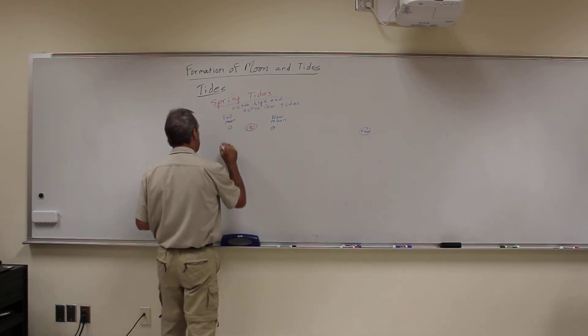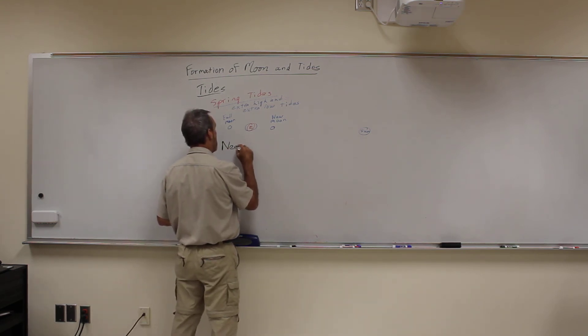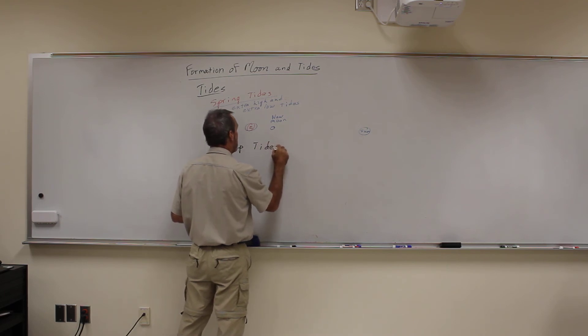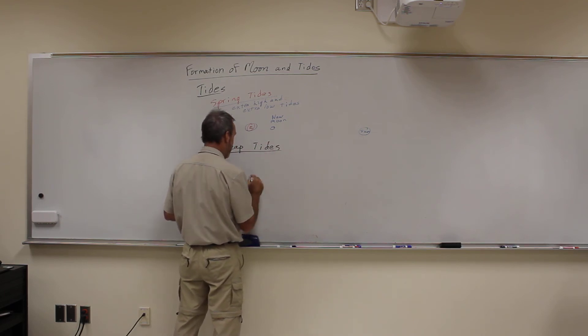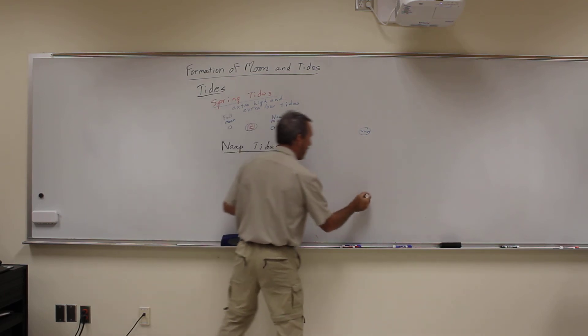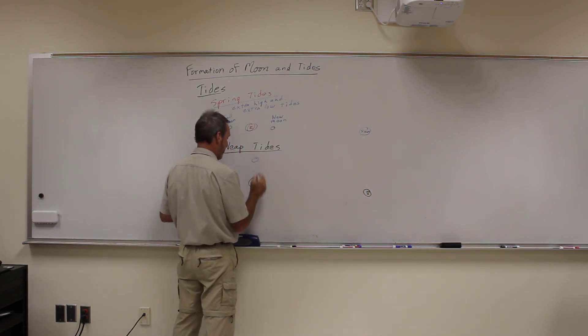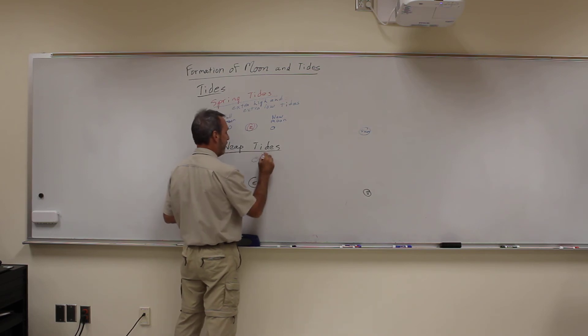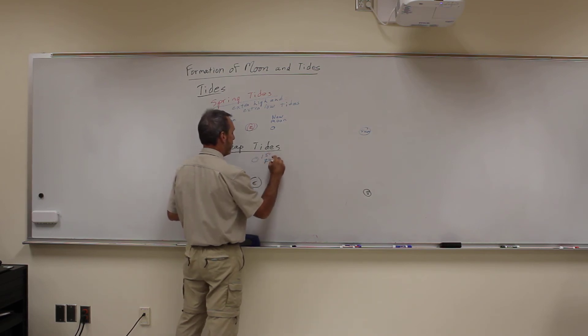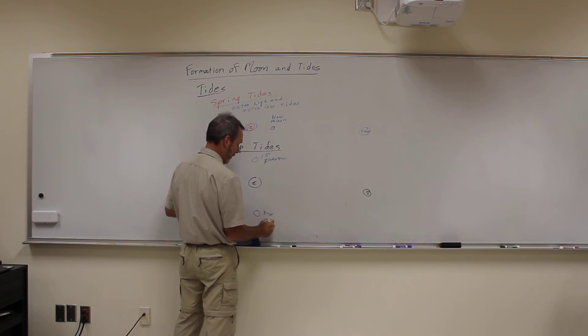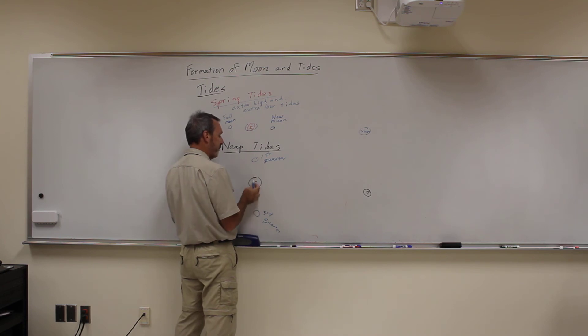Now we can have what they call neap tides. And that occurs when the earth, sun, and then the moon are at right angles. So the moon and the sun are actually kind of fighting each other. This is that first quarter, and this is that third quarter. And in this case, the moon's trying to pull all the water on the earth this way, the sun's trying to pull it this way. So you don't have as big a difference.